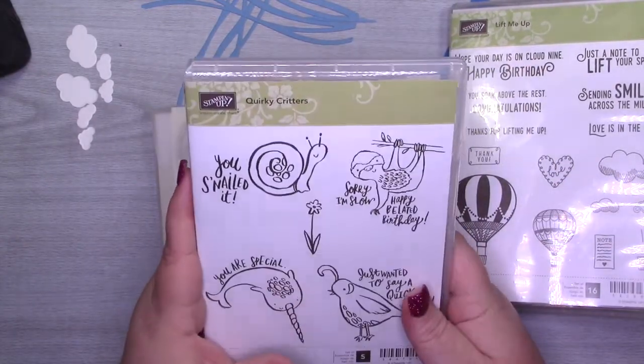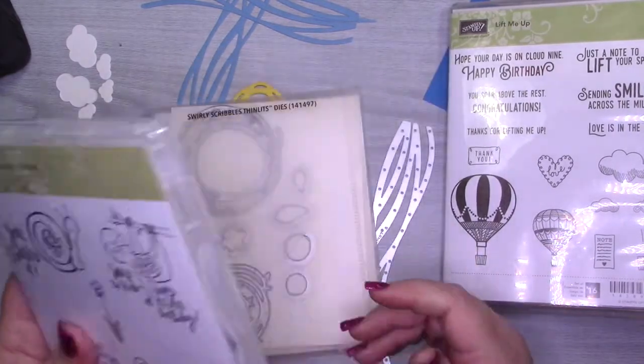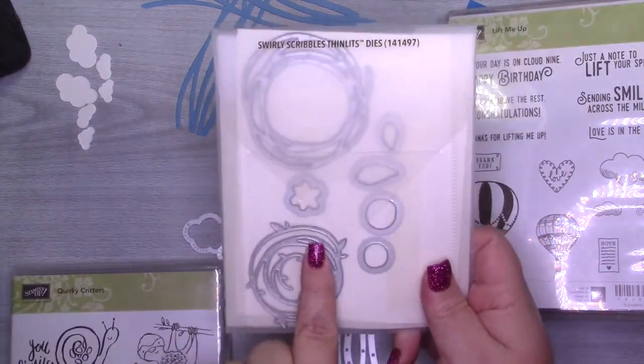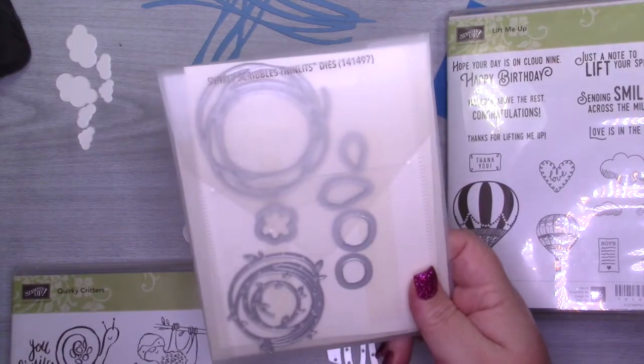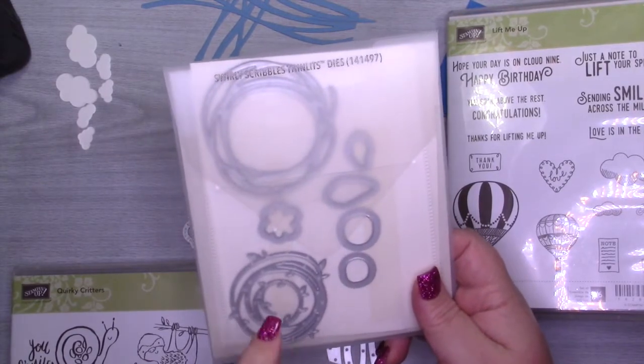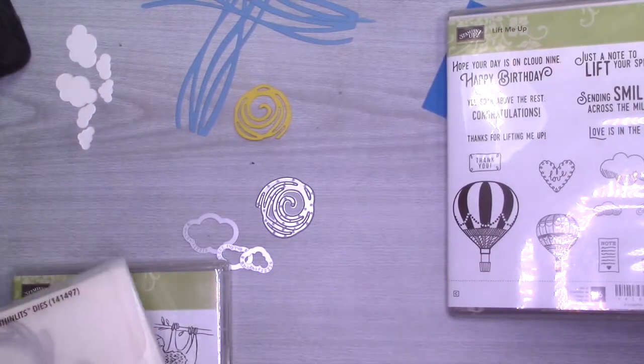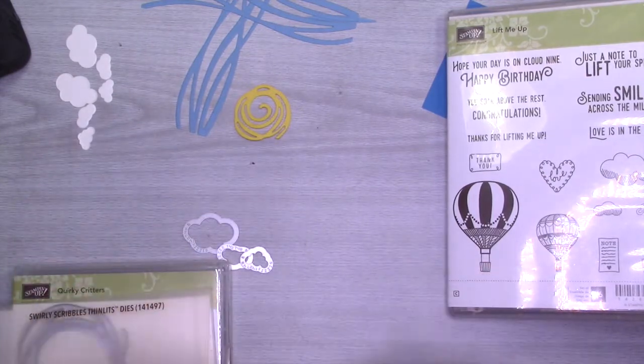Today I'm working with the Quirky Critters again and I pulled in a couple of other die sets. I'm using the Swirly Scribbles. This was in last year's annual catalog. I'm pretty sure, I'm sure that it's still available. I will link it down below. Out of this I've used this wavy one and then this smaller circle.